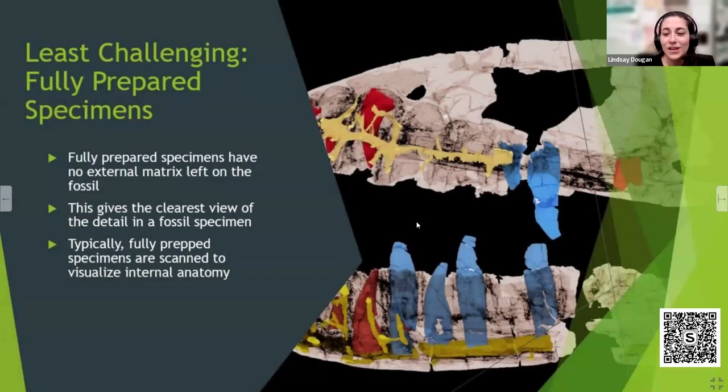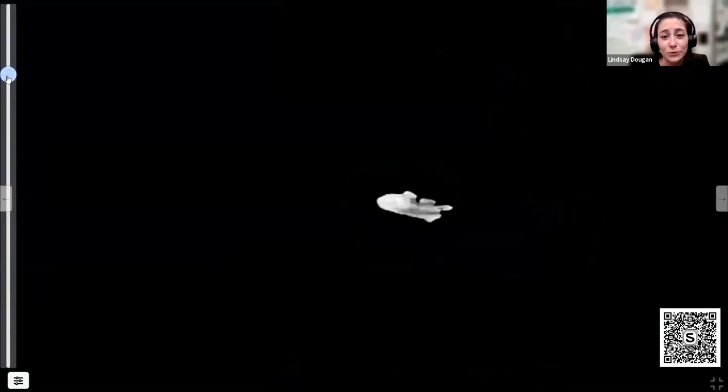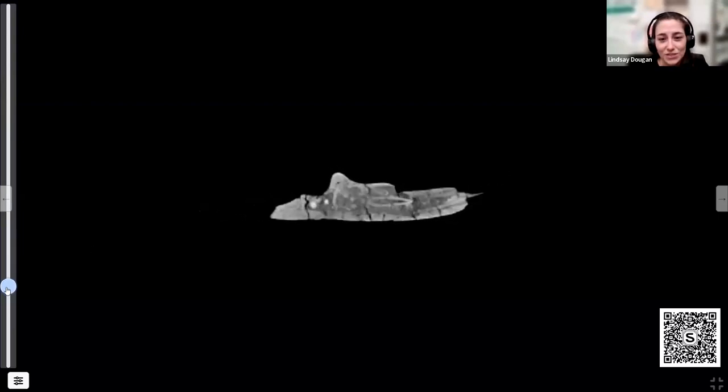The least challenging specimens that we have are the ones that have had all their matrix removed from the surface. This means when we scan it, the x-rays go really deep into the specimen and we can see the clearest view of the internal anatomy of these animals. Whenever we get to scan these, we get really excited because we know the results are going to be stunning. We'll start with the maxilla. This is the Majungasaurus maxilla that was scanned after it was prepared. There is still a little bit of matrix inside the jaw, but you can see there's teeth already starting to form here. This tooth is actually loose. If this animal had lived a little bit longer, it probably would have lost this tooth and had this other one come in to replace it. As you scroll through, you start to see other parts of the bone. This is actually the part that reaches up and forms the orbit of the eye. We've got lots of dental anatomy in here. It's very cool to see how many teeth it was growing before it died.